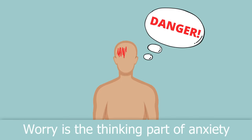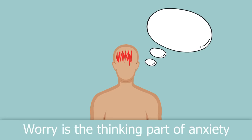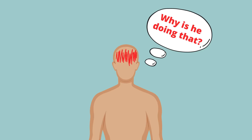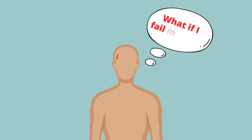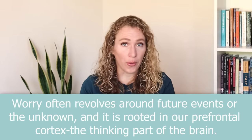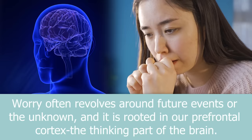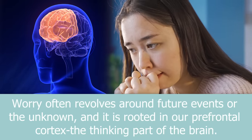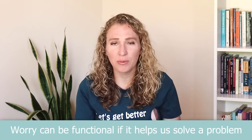Worry is the thinking part of anxiety. Worry includes thoughts like: what if he falls? Why is he doing that? What if I fail my test? Is she mad at me? Worry often revolves around future events or the unknown, and it's rooted in our prefrontal cortex — the thinking part of the brain. Sometimes worry can be really functional and helps us solve problems. But if worry becomes compulsive or constant, it can fuel anxiety and depressive disorders. Later in this course you'll learn how to stop worrying and set really good boundaries around that thinking part of your brain.